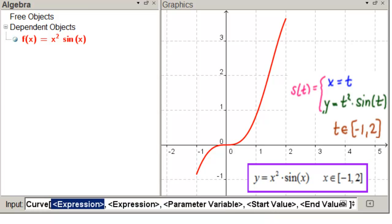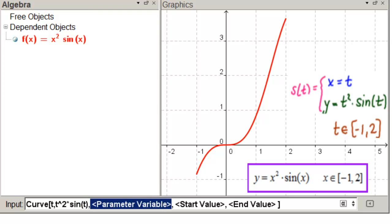So T. Tab over. T squared. Times sine of T. Tab over. Parameter variable is T. The start value is minus 1. The end value is 2. And we want to see our line covered up when we hit enter.